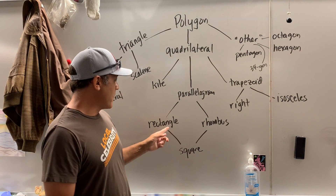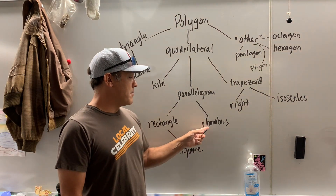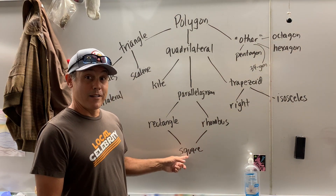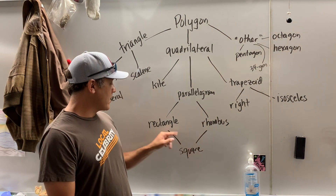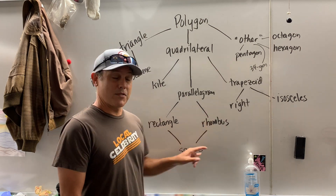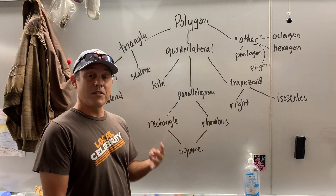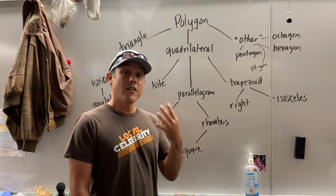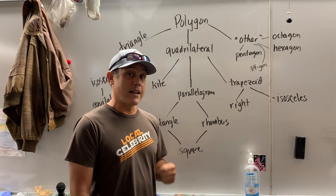A rectangle and a rhombus had a kid called a square. It took the characteristics of both a rectangle and a rhombus. What is a square? You already know: four right angles, four congruent sides.